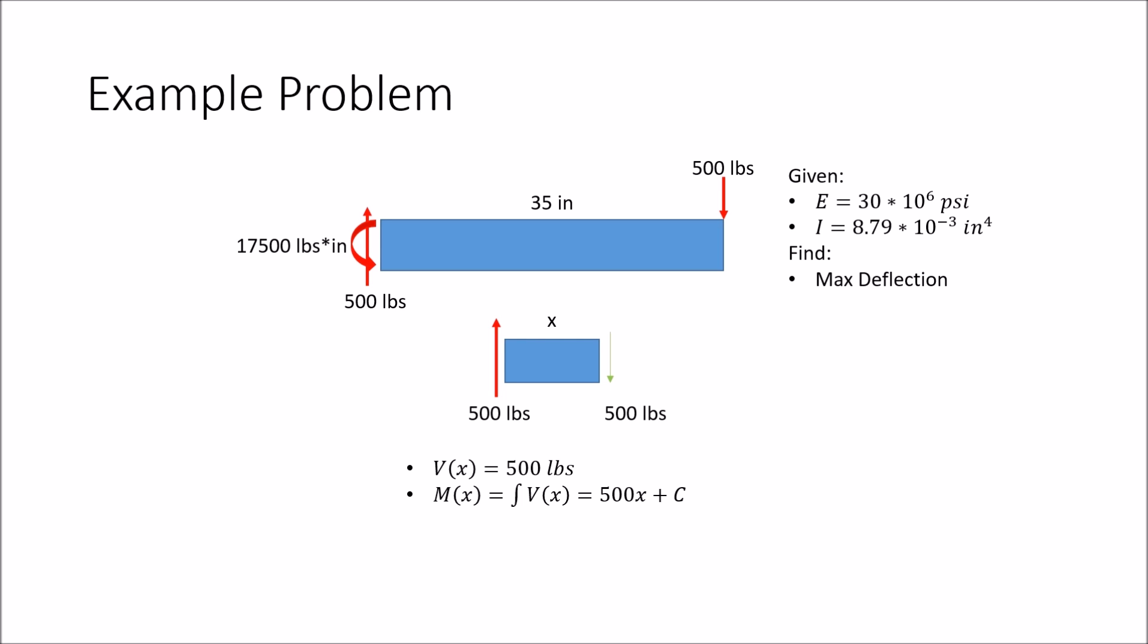So then you have to find a point where you know what the internal moment is, which is at x equals zero, we know that it is equal to negative 17,500 due to that wall reaction. So therefore, our internal moment equation is this.